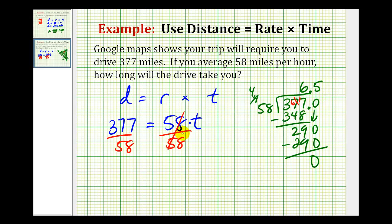So the time it would take to travel 377 miles at 58 miles per hour would be 6.5 hours.